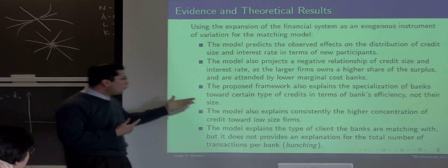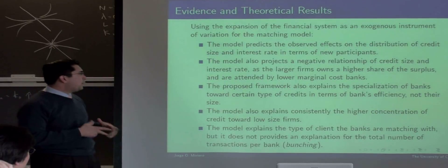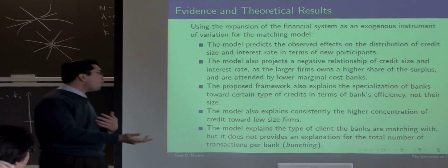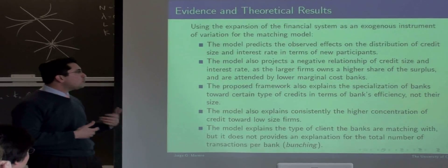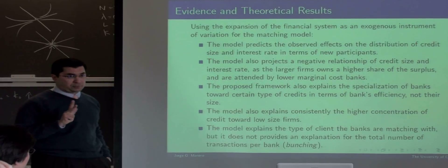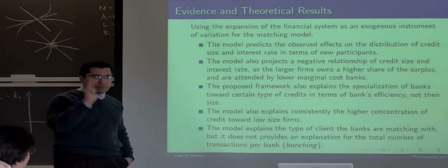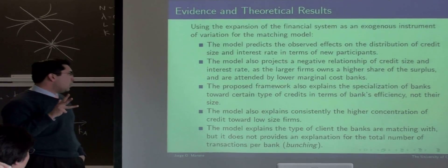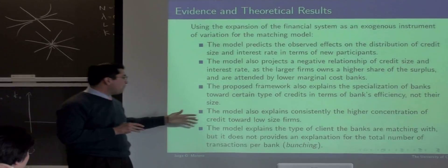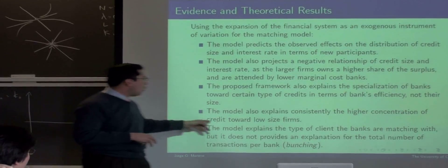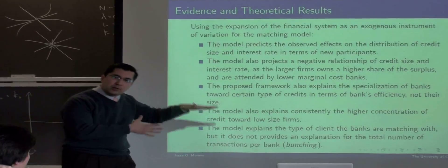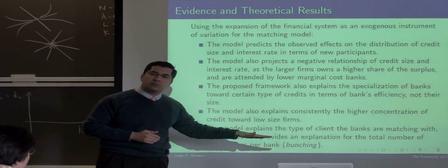Also, the proposed framework predicts the specialization of banks towards certain types of clients in terms of tax efficiency. Not size, but efficiency. We need to be measured, so far. Also, the model explains consistently the higher concentration of credit towards low-sized firms, which are the new entrants in the economy.